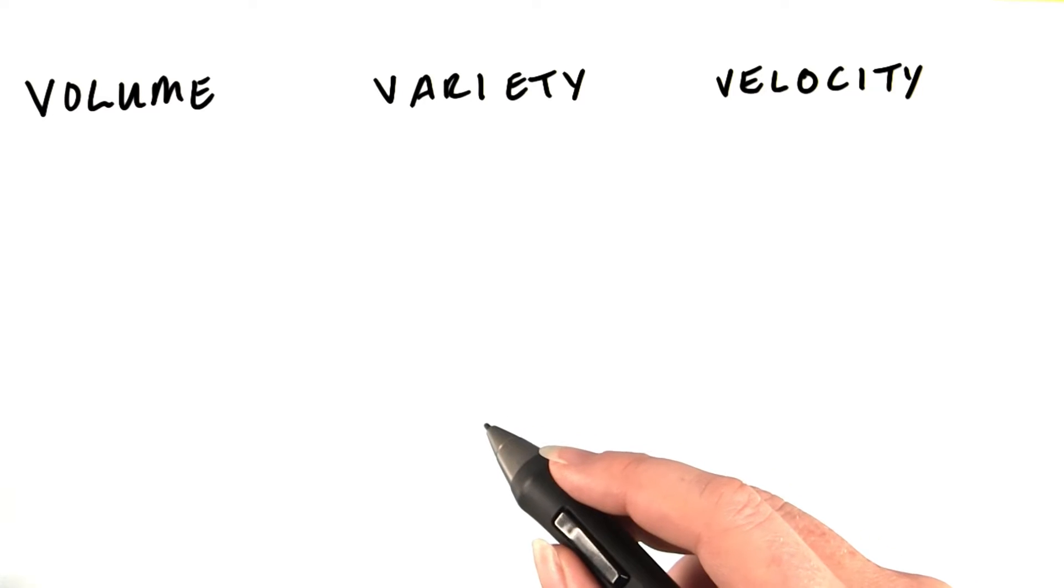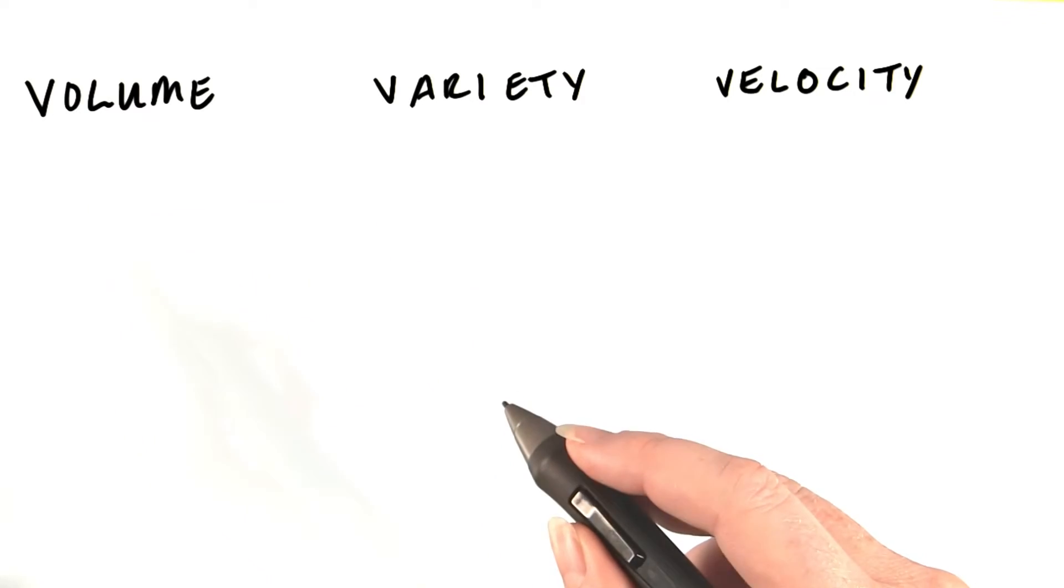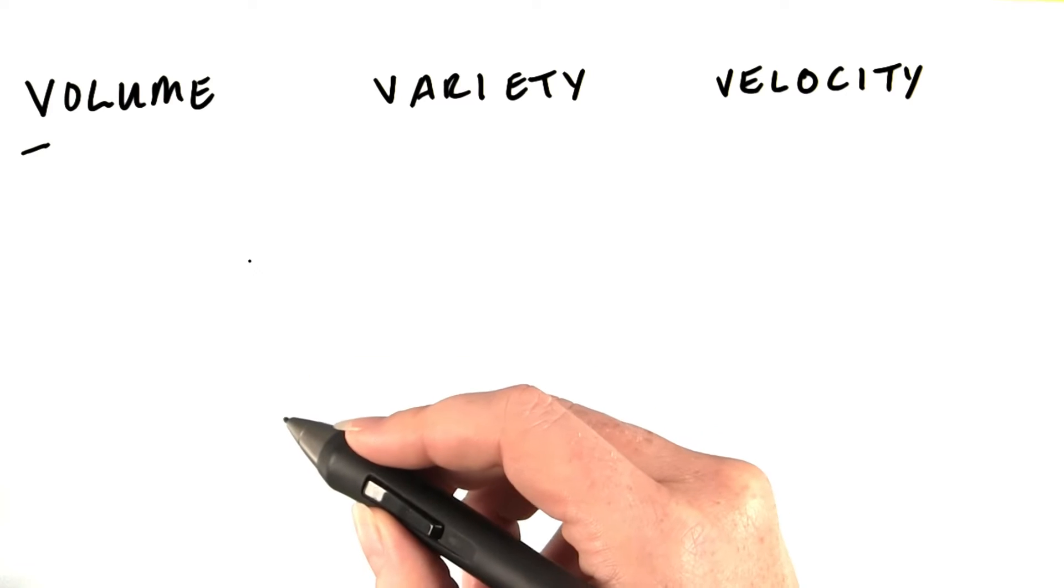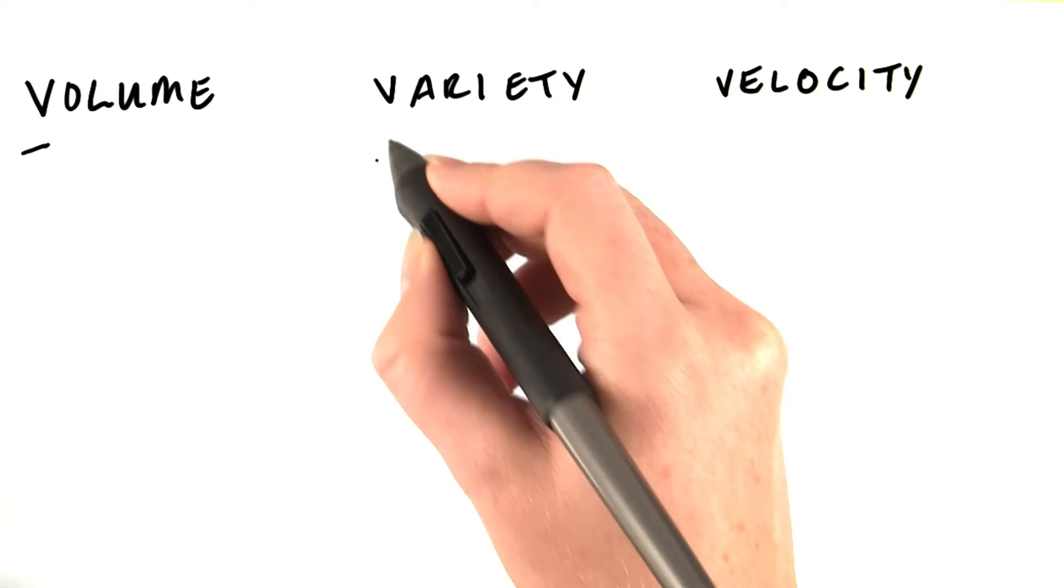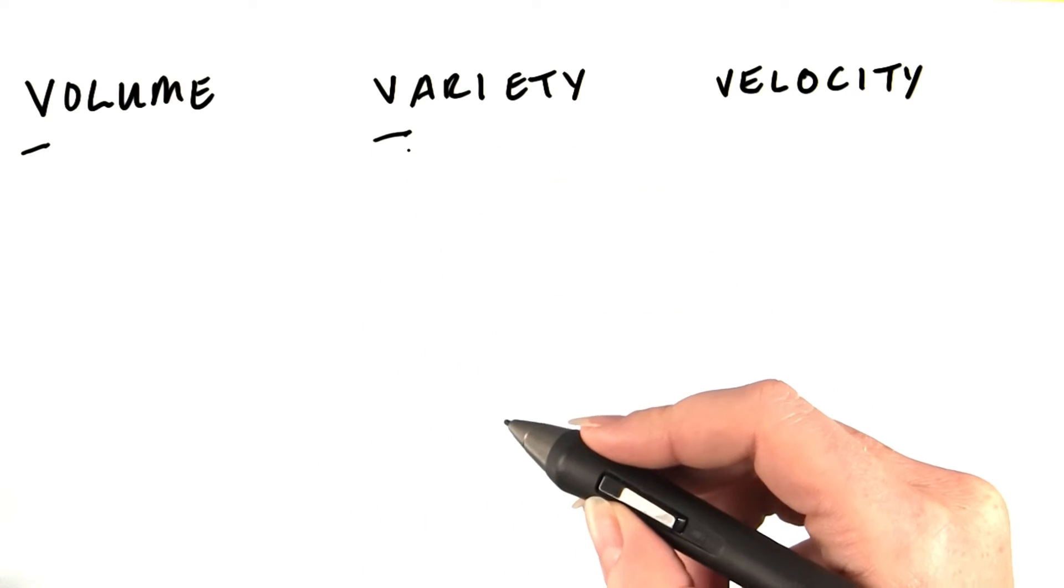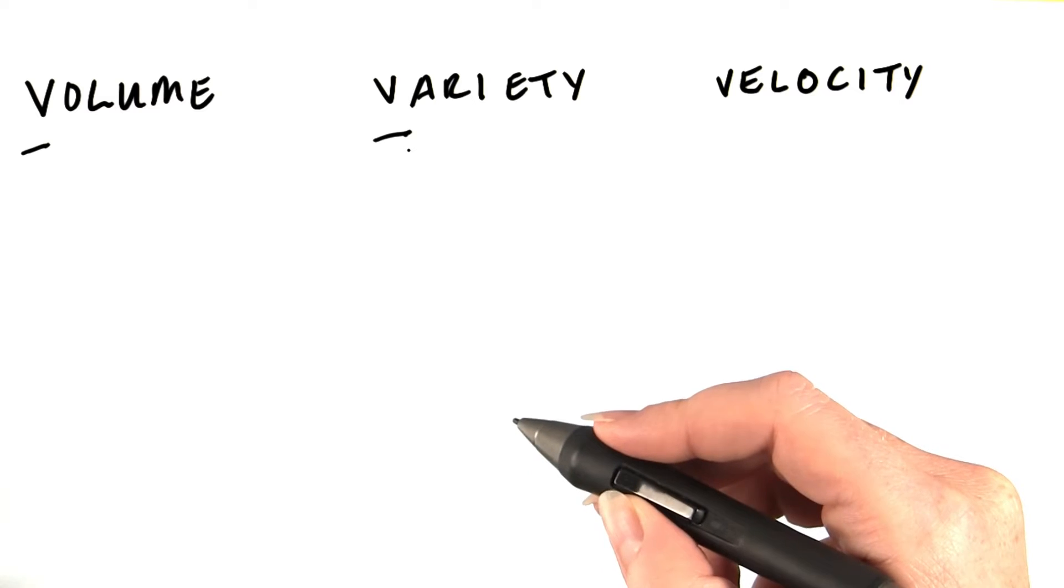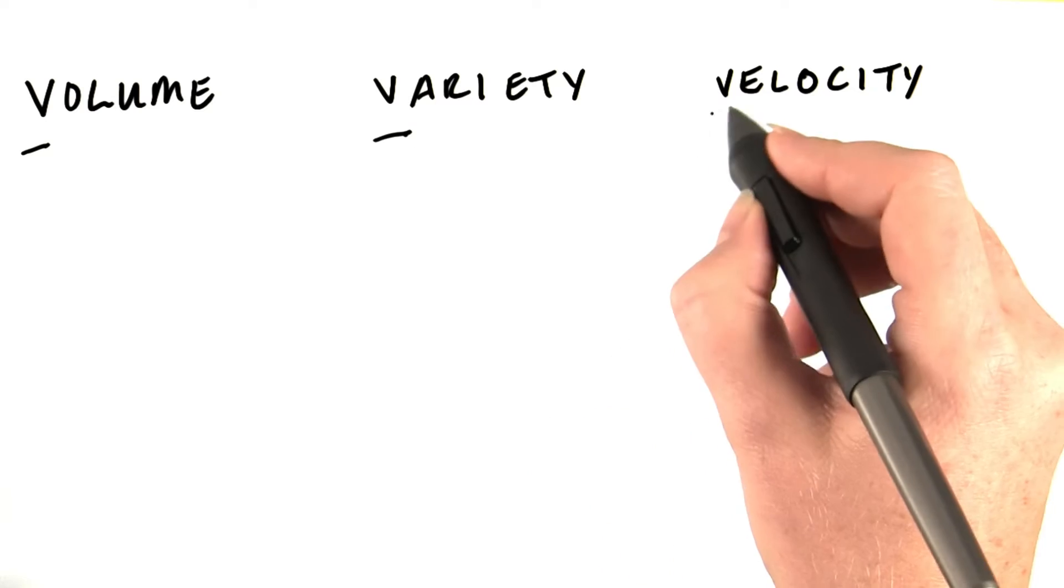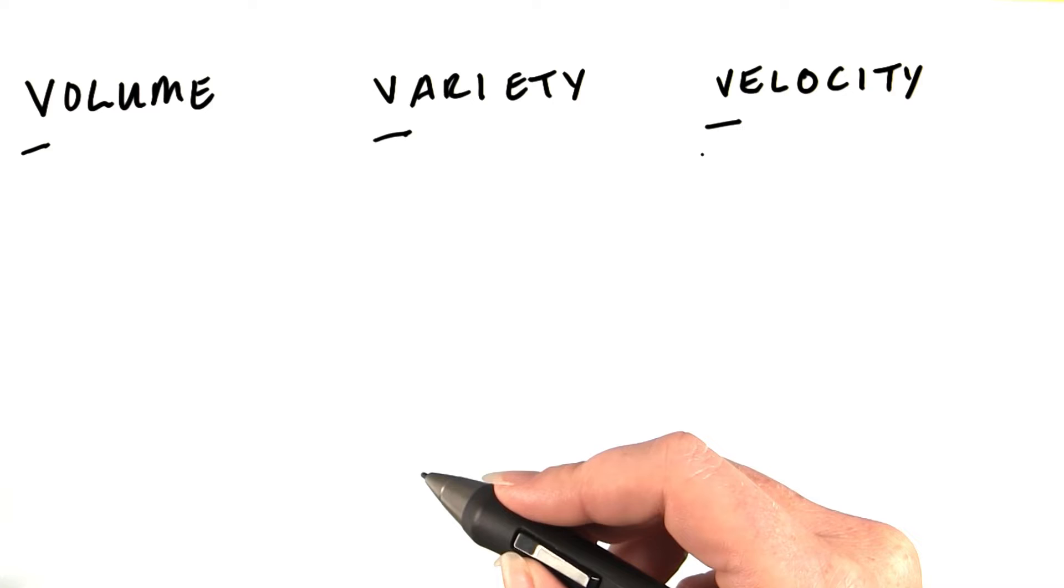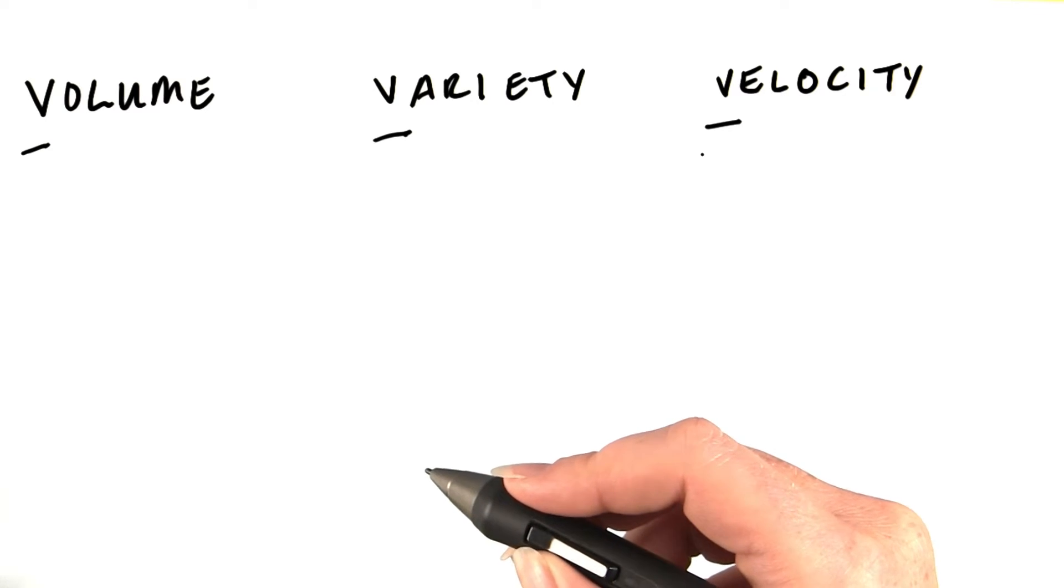When you read or talk about big data, you often hear people say the three V's. Volume refers to the size of the data you're dealing with. Variety refers to the fact that data is often coming from different sources in different formats. And velocity refers to the speed at which it's being generated and the speed at which it needs to be made available for processing.